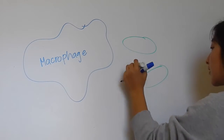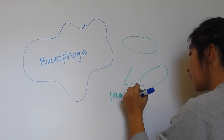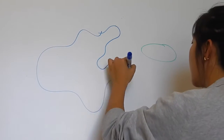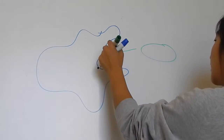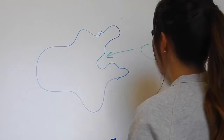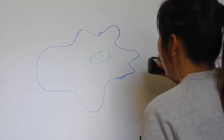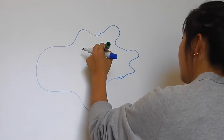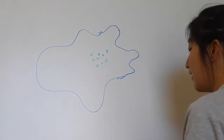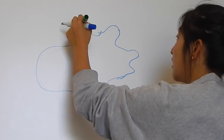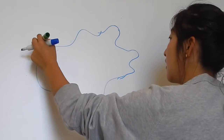The humoral response begins similar to the cell-mediated response. A pathogen enters the bloodstream and a macrophage that encounters it engulfs it through endocytosis into an endocytic vesicle, where it digests it using enzymes. MHC proteins bind to the antigen fragments and transport them to the surface.